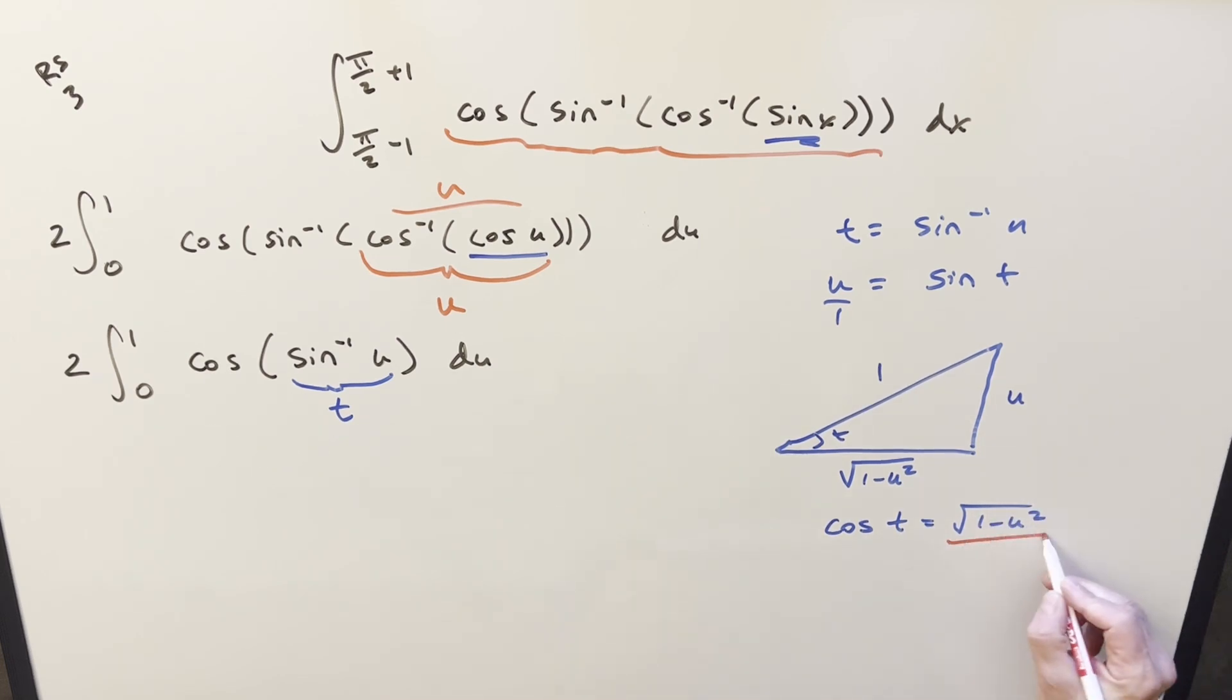So now what happened is our whole integral just became square root of 1 minus u squared. Let me rewrite that. So we're just integrating 0 to 1 square root 1 minus u squared du. And at this point, you could do a trig substitution. But the thing to notice is this is really just the equation for the top half of a unit circle.